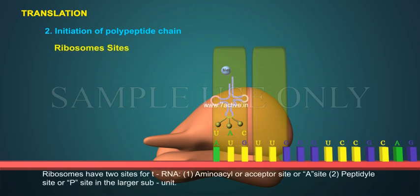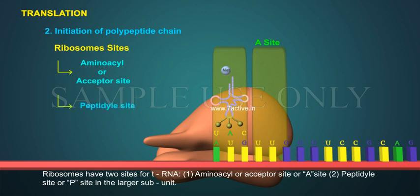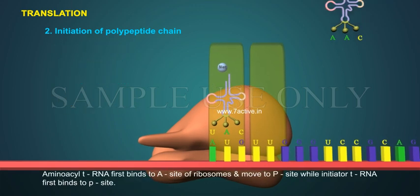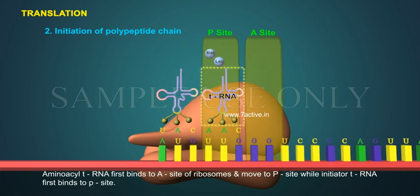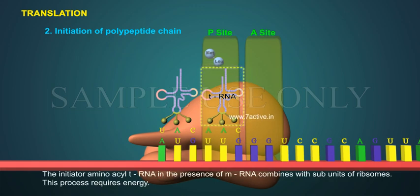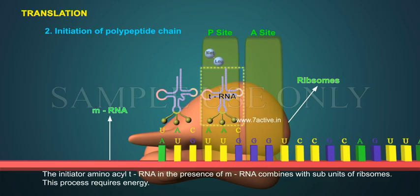Ribosomes have two sites for tRNA: 1. Aminoacyl or acceptor site (A site), and 2. Peptidyl site or P site in the larger subunit. Aminoacyl tRNA first binds to the A site of ribosomes and moves to the P site, while the initiator tRNA first binds to the P site. The initiator aminoacyl tRNA, in the presence of mRNA, combines with subunits of ribosomes. This process requires energy.